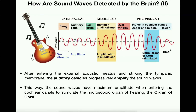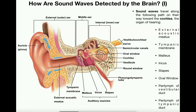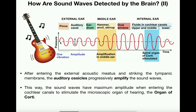Before concluding, one more thing about the sound waves. The pinna — that's just the outside of the ear, the auricle. Once sound waves enter the pinna and go through the external acoustic meatus and then to the tympanic membrane, notice that there's no change in amplitude of the sound waves — meaning there is no amplification up through the tympanic membrane. The amplitude when it enters the ear is the same all the way through the tympanic membrane.